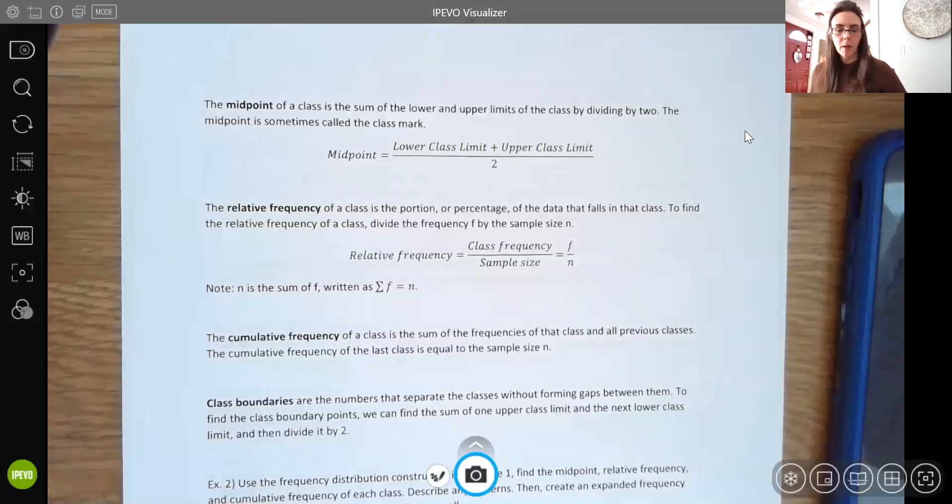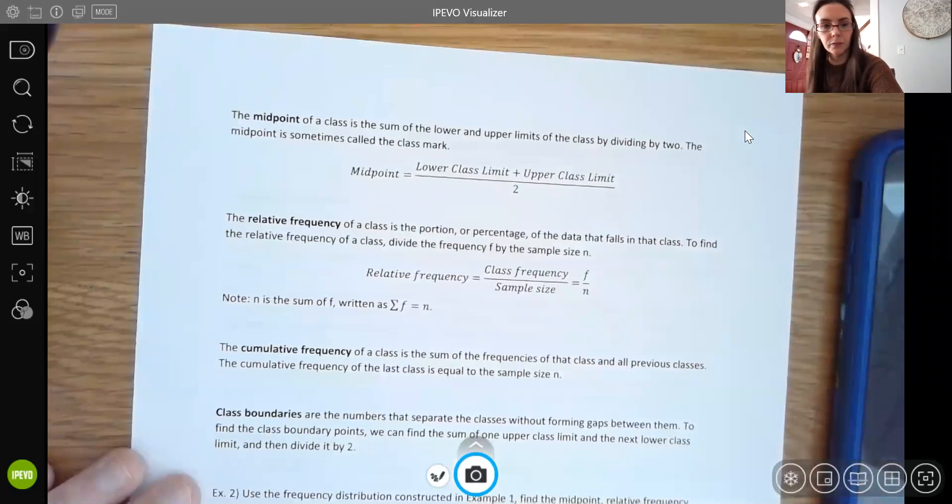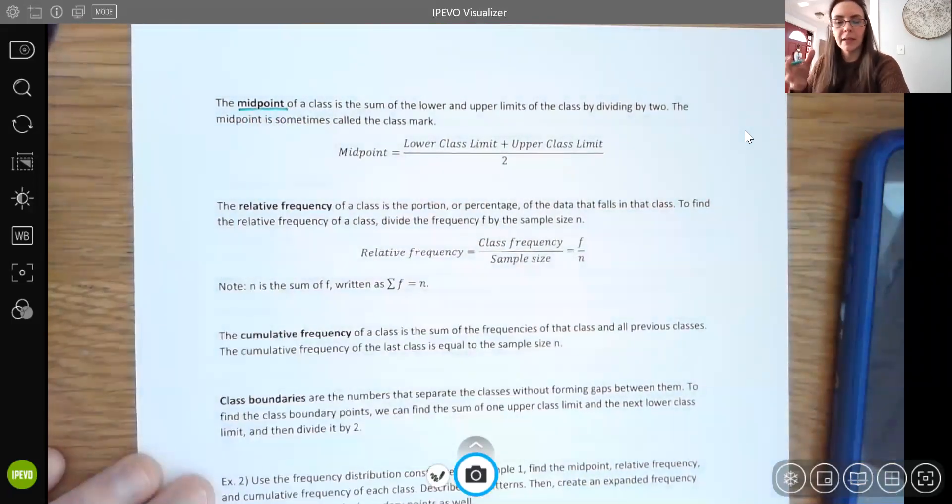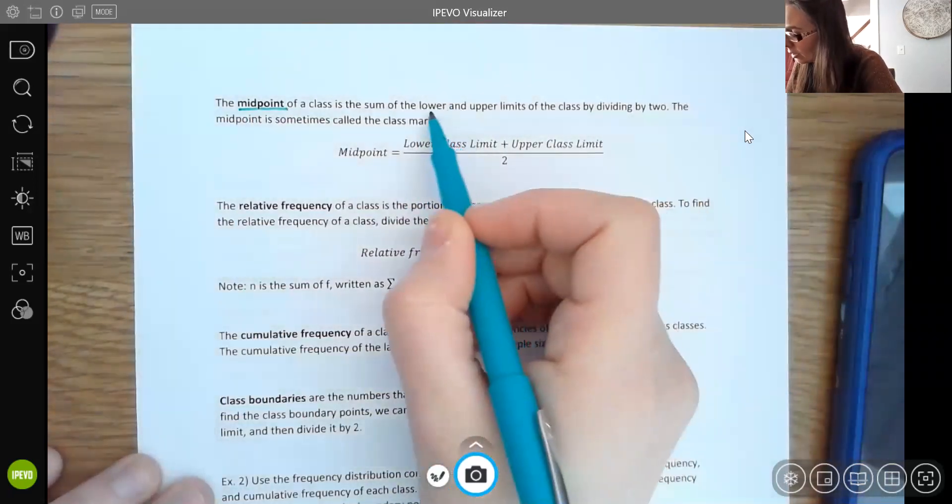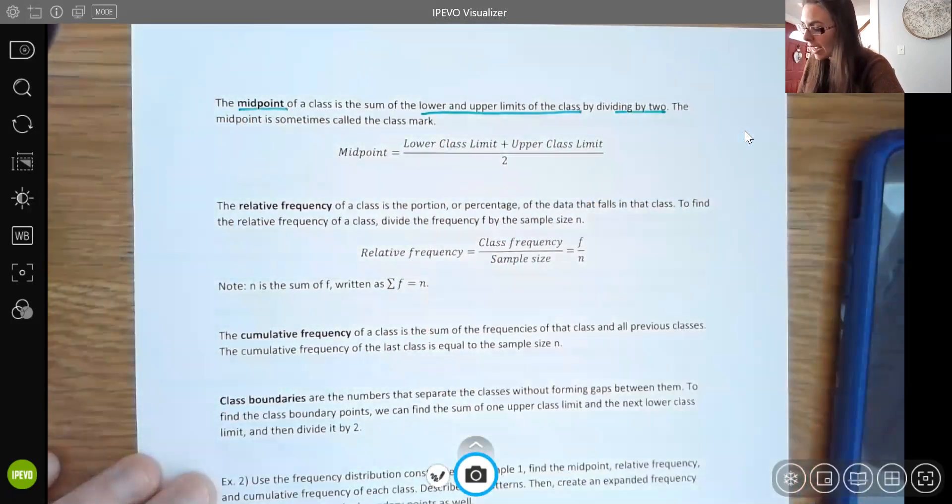We're going to keep going with the same example, but just talk about a few more definitions here. So we do have what is called the midpoint. The midpoint of the class is like you would expect, it's the halfway point of that class. What you can do to find it is take the lower and upper limits of that class and divide it by two. So it's really just an average and that marks the middle of that class.